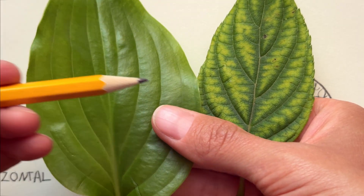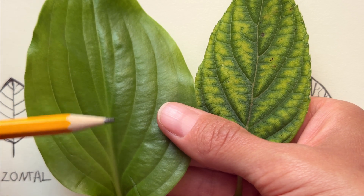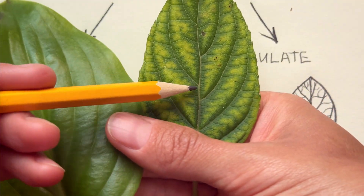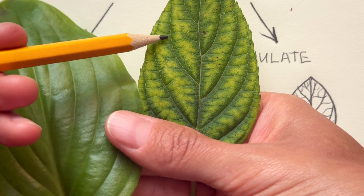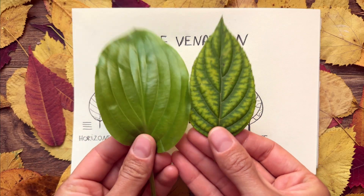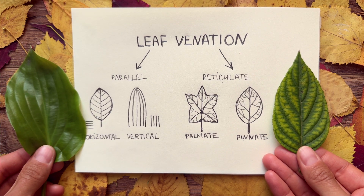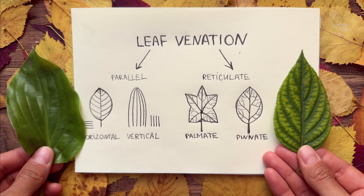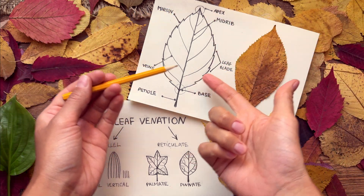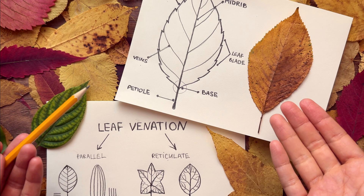Let's compare the horizontal and pinnate types. On the left, horizontal — simple, with very few tiny veins. On the right, pinnate — you can see lots of smaller branches coming off the central vein. These two examples really show the difference between these venation types well.